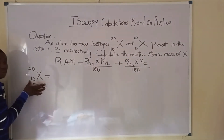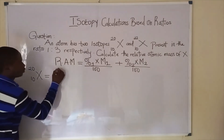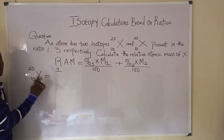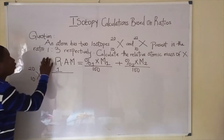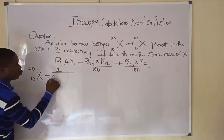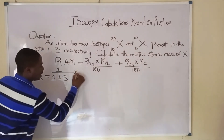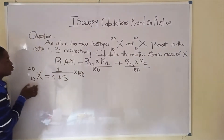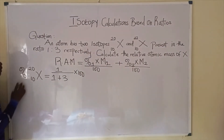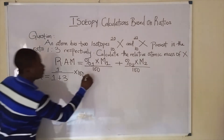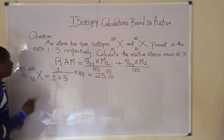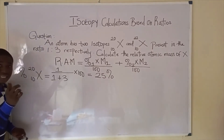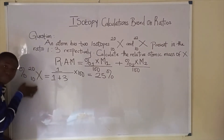Since we are looking for the first isotope x20, we bring the value of 1 as the numerator, dividing by the addition of the two ratio values, which is 1 plus 3, times 100, since we are asked to get percentage abundance. When we calculate this, we get 25%. So 25% is the percentage abundance of the first isotope.